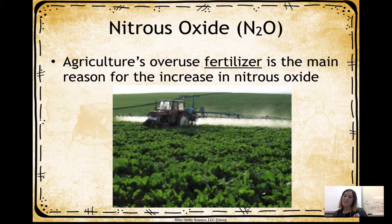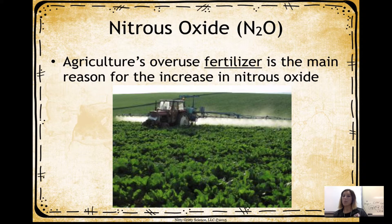Nitrous oxide is another greenhouse gas. Agricultural farmers sometimes overuse fertilizer on their crops, and not all of it gets into the plant itself. Just like transpiration in the natural water cycle, the nitrous oxide gets evaporated up into our atmosphere. So we have all these bad chemicals sitting in the atmosphere that isn't able to protect us because these bad chemicals are causing a hole.